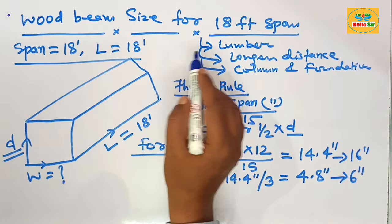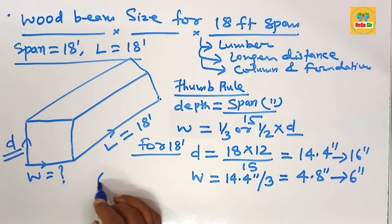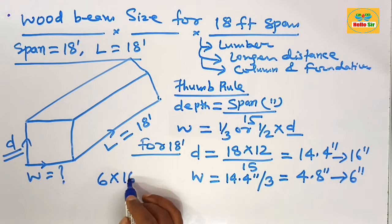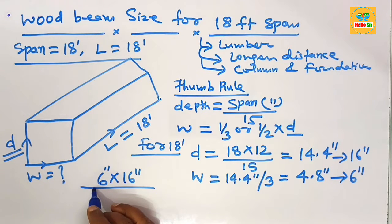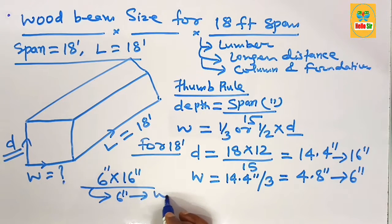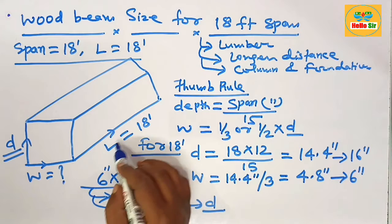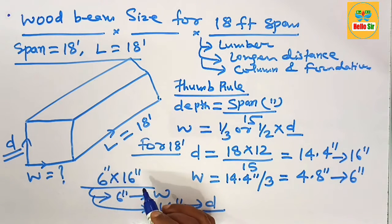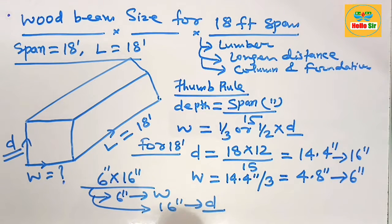For a span of 18 feet, you need about a 6 by 16 inch wood beam, where 6 inches is the width section, 16 inches is the depth section, and the span length is 18 feet.